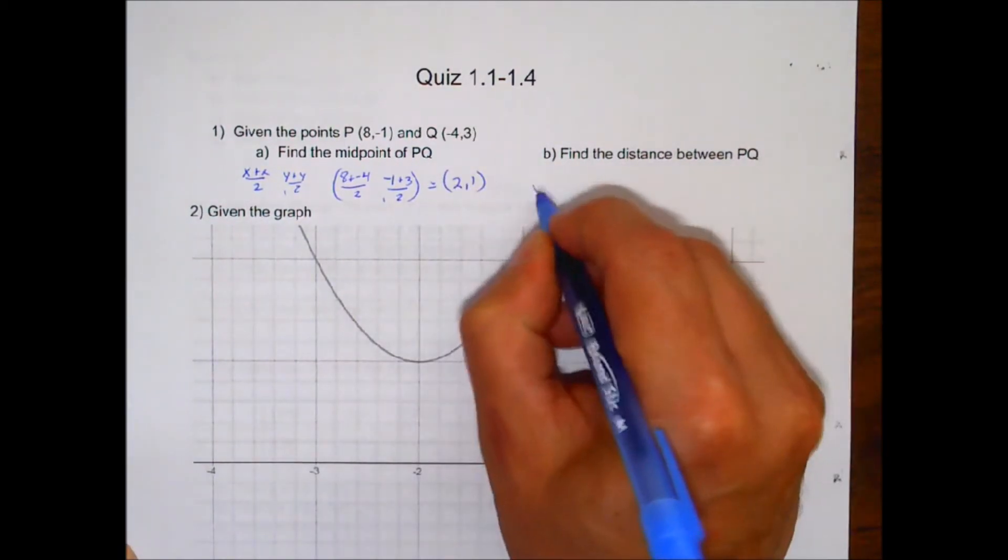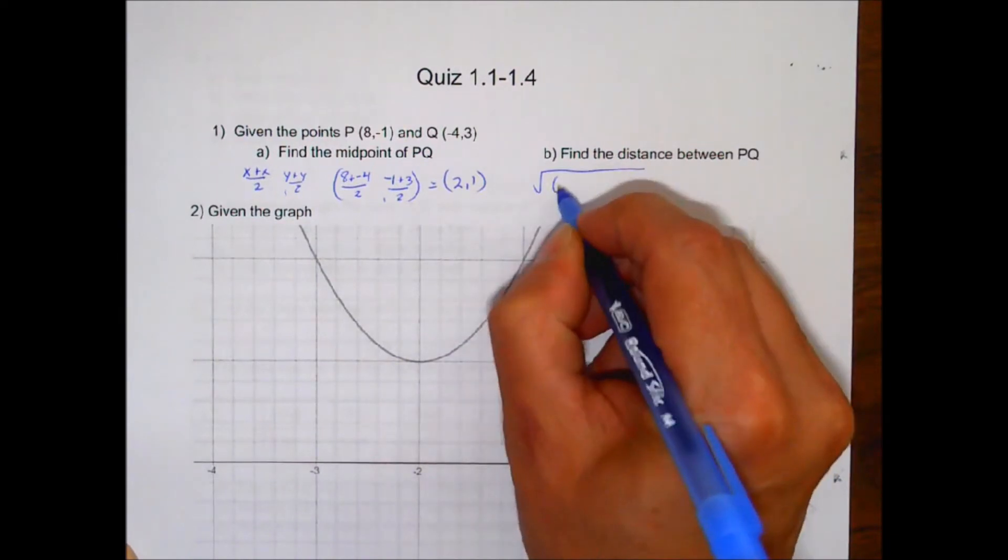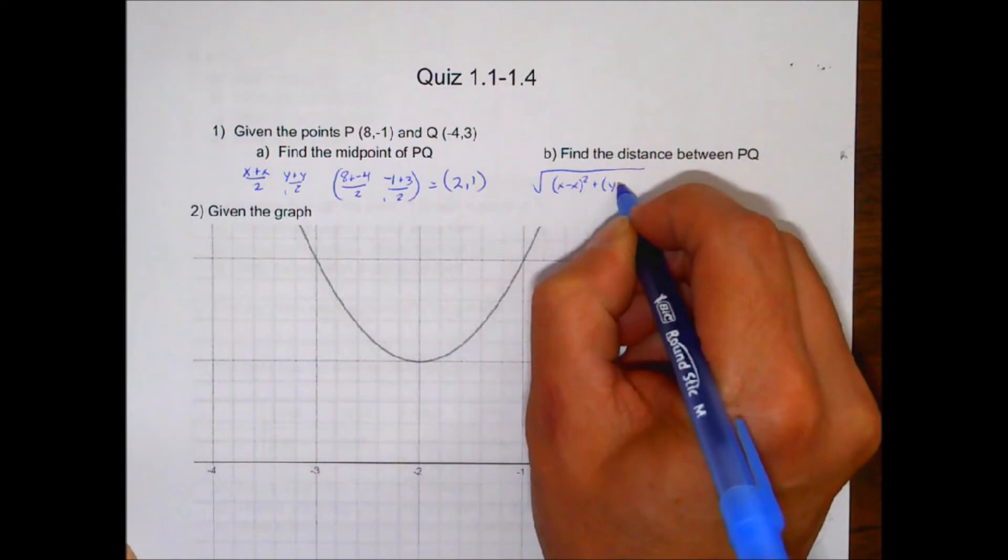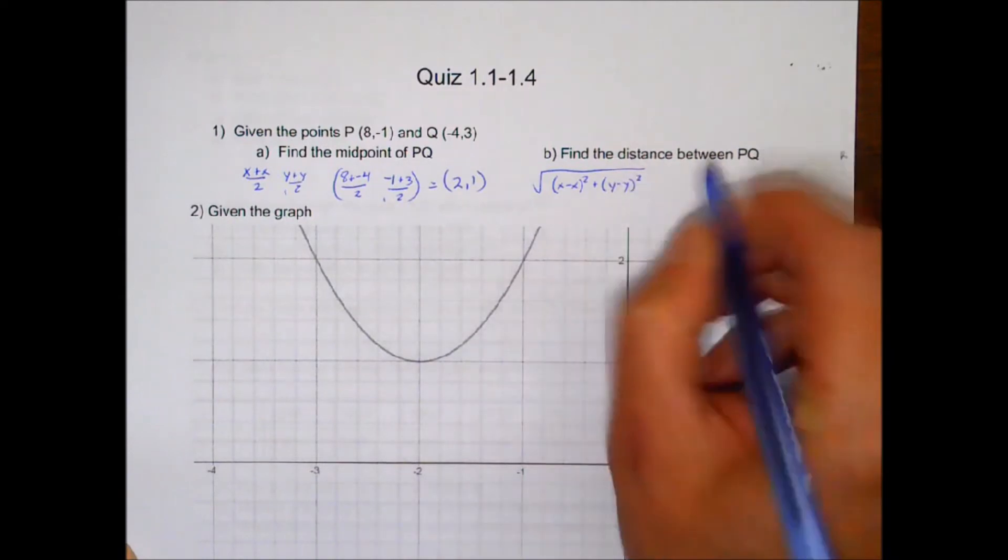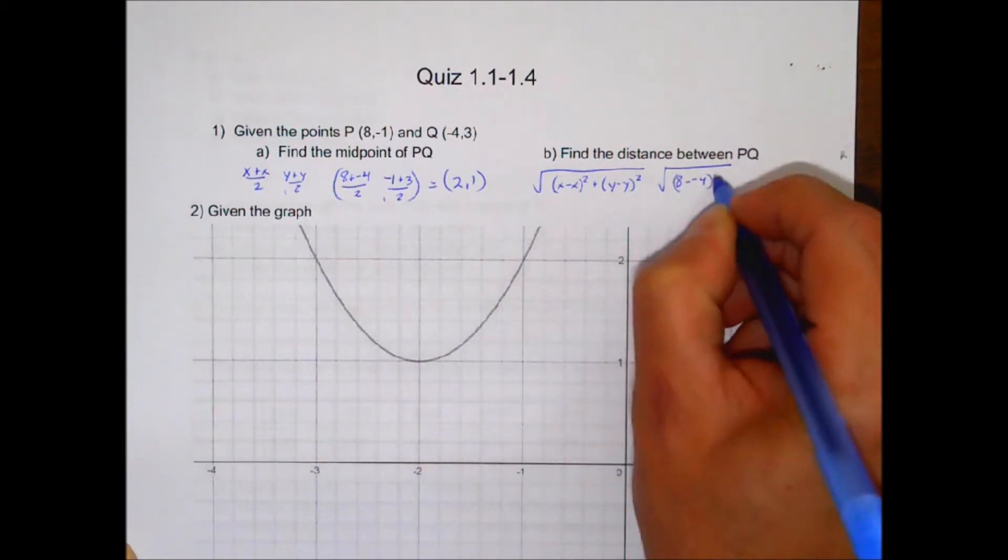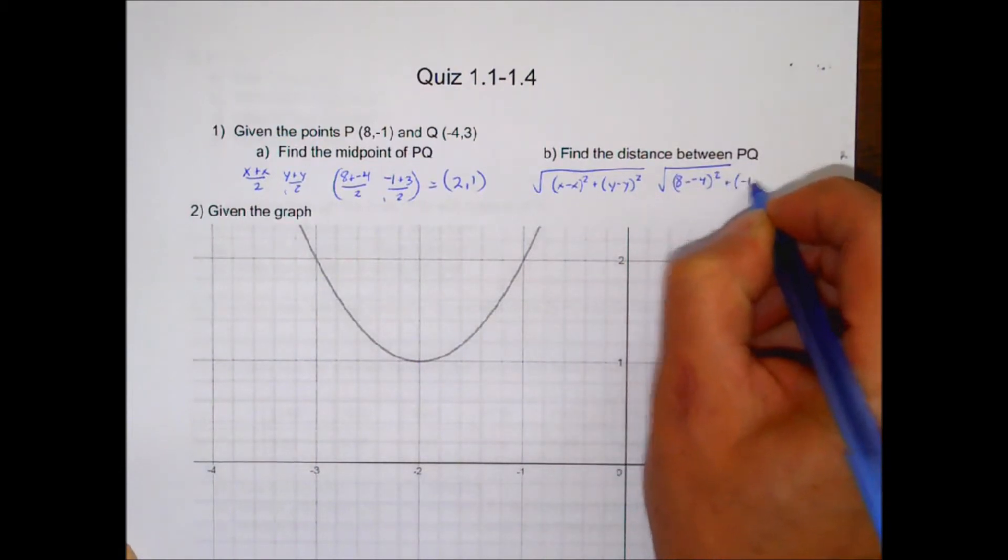Finding the distance, distance formula is square root of x minus x squared, plus y minus y quantity squared, and you plug those values in, you get the square root of 8 minus negative 4 squared, plus negative 1 minus 3 squared.